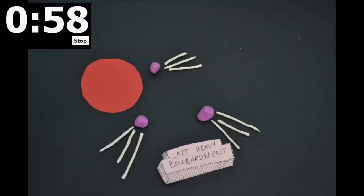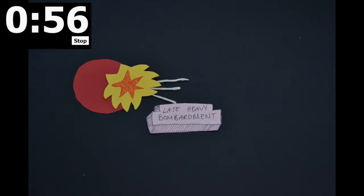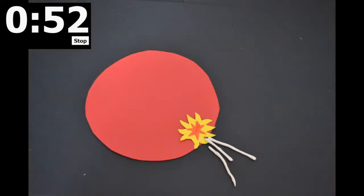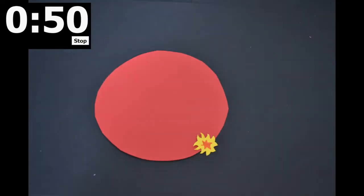Early in its life, Mars was hit by a series of asteroids called the Late Heavy Bombardment, which is responsible for many of the craters we see on Mars, our Moon, and even Earth.